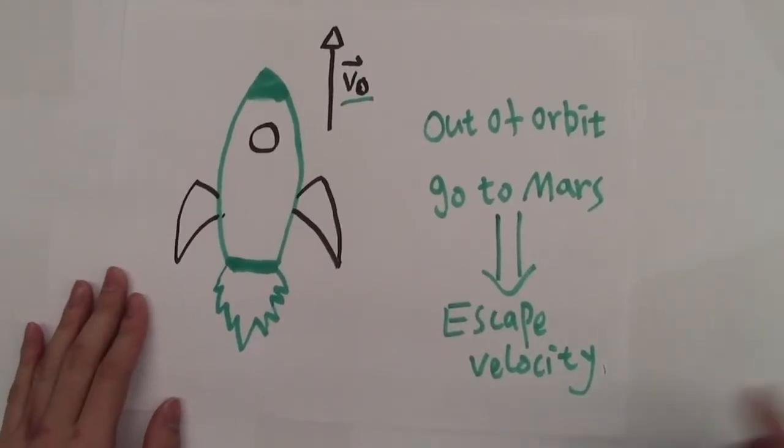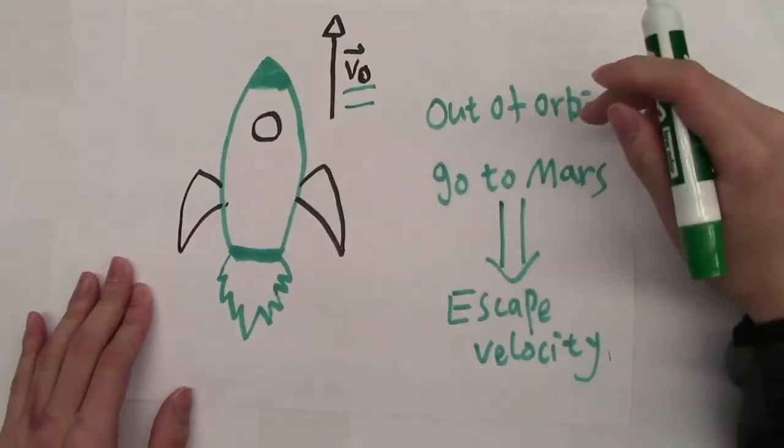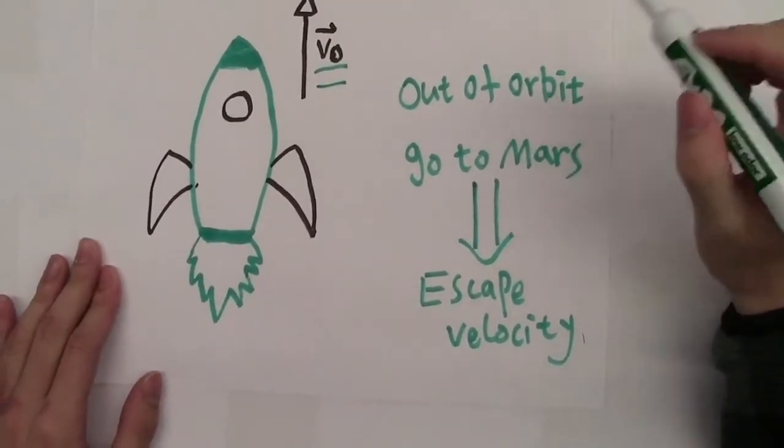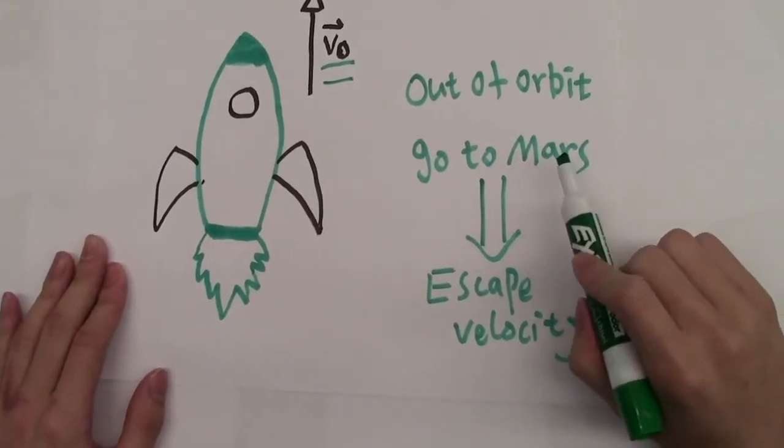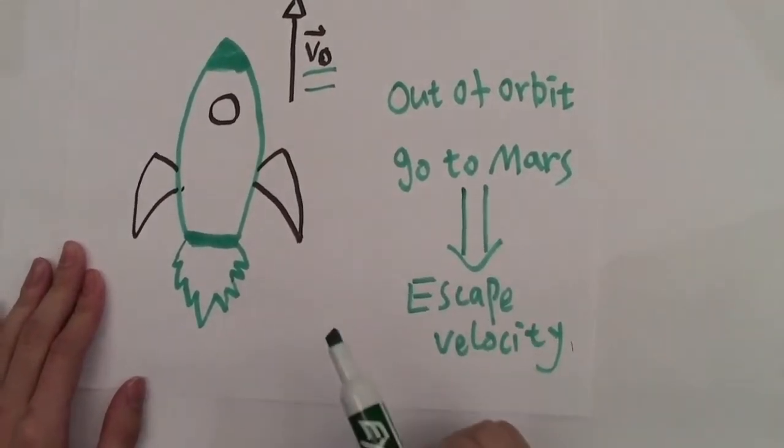So let's talk about our problem. We have a rocket here with a certain initial velocity. We want to calculate the minimum of that initial velocity such that it can fly out of Earth's orbit and go to Mars. This introduces us to our topic today of escape velocity.